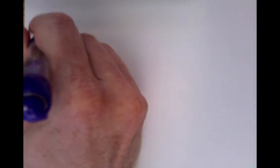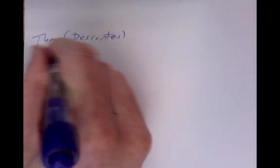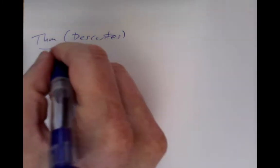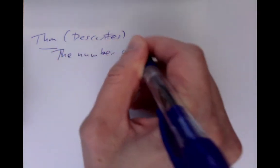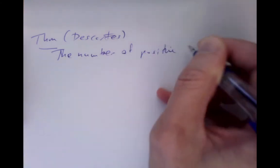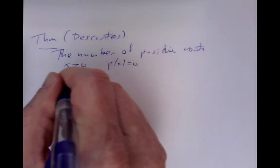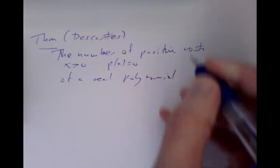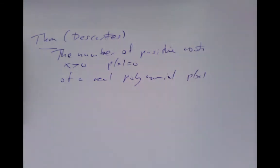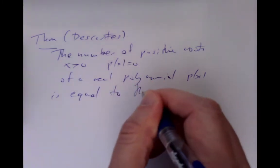Let's consider a more sophisticated technique: the theorem of Descartes — Descartes' rule of signs — which allows us to count not all the roots, but to count something about the number of positive roots, meaning x greater than or equal to zero where the polynomial equals zero, for a real polynomial in a single variable.